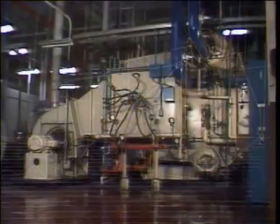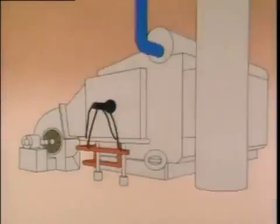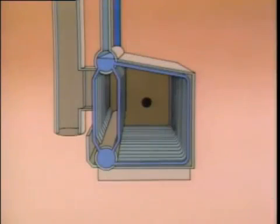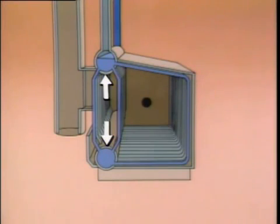Water tube boilers use tubes to route water and steam through the boiler. The combustion gases flow past the outside surfaces of the tubes. Water tube boilers may vary in design, but most of them operate in basically the same way. This particular boiler consists of a series of water tubes and two drums. The drums distribute water to the tubes. The water tubes connect the drums and form a wall around the combustion area of the boiler. This is where heat is generated.